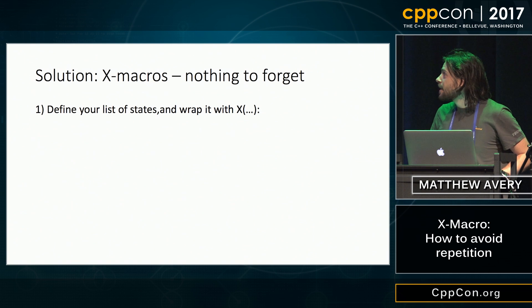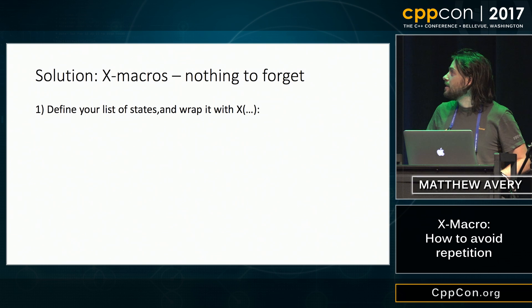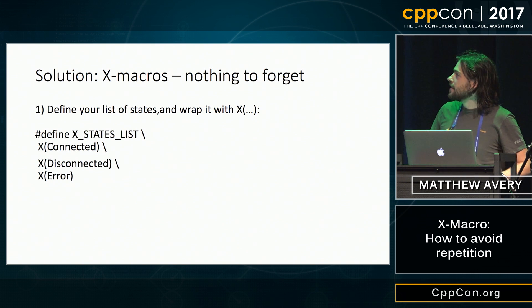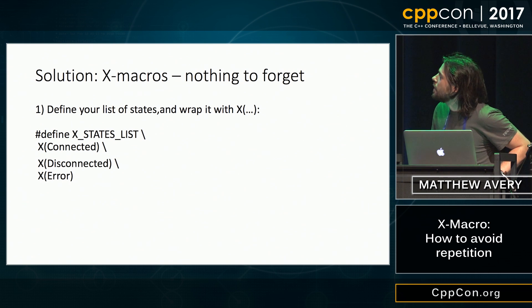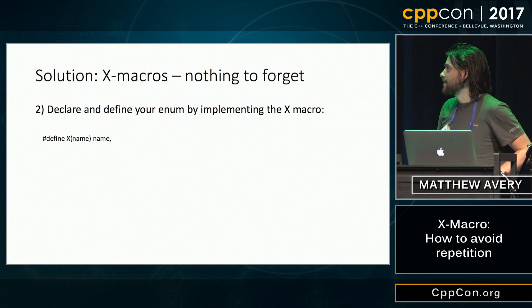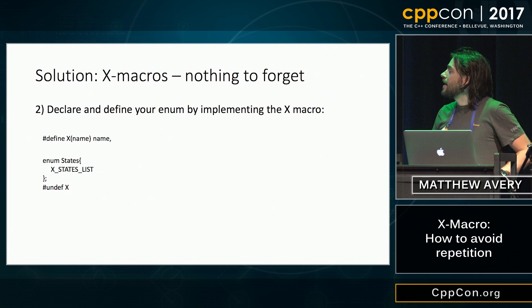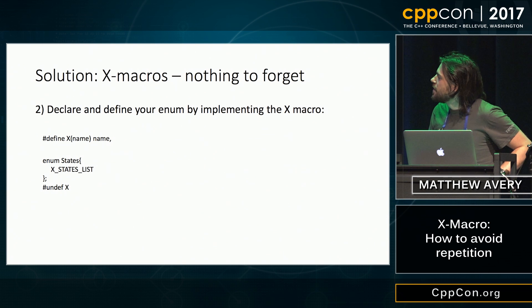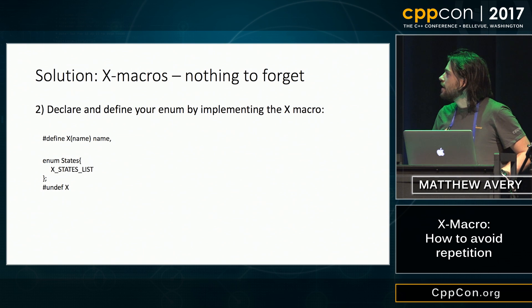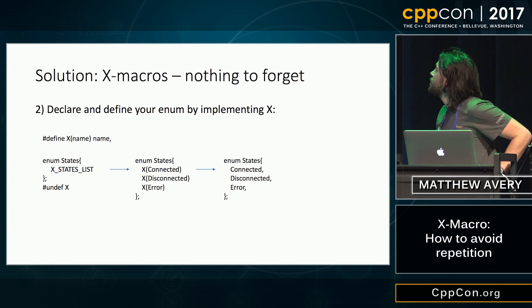So xmacros is a solution to this problem. You'll need to do three things for this example. The first thing is you want to define a list of states. Here I have my three states: connected, disconnected, and error. It's wrapped with this X — hence the name xmacro. So why do we need to wrap that in an X? Let's see how we would implement the enum with the xmacro. You want to declare and define your enum by implementing the xmacro. Here's the definition of the xmacro for the enum — it looks a little quirky, but that's how it is. Basically what the preprocessor is doing here is it's going to expand that to the list, you're going to get a bunch of X's, and since you defined X, it's going to expand that again, and you get your enum.